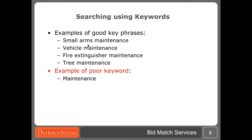Here are some examples of good keywords. 'Small arms maintenance' — we know exactly the type of maintenance the client is doing. 'Vehicle maintenance,' 'fire extinguisher maintenance,' 'tree maintenance.' You can see that these four different variations of maintenance would give completely different bid results. Using the simple keyword of 'maintenance' is too generic — it would give you all sorts of matches. Try to be as specific as you possibly can without getting too specific. It's a fine balance. Similarly, 'project management' is probably one of the most common phrases that we see in search profiles. Project management is used in every single industry. If your client is more into construction project management, then let's identify that. If they're more into system analysis type of project management, again identify that. Transportation project management — let's make sure we put these keywords together.